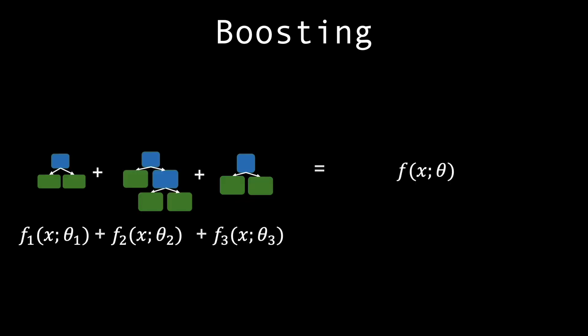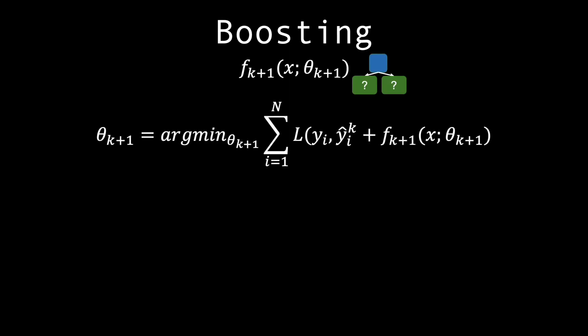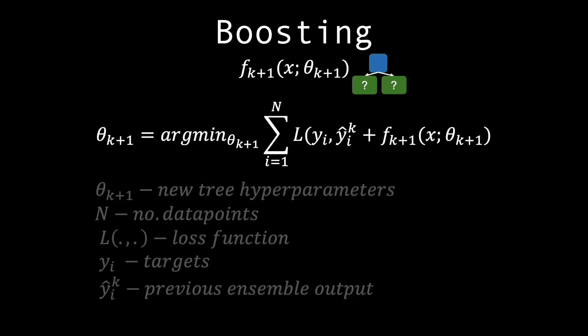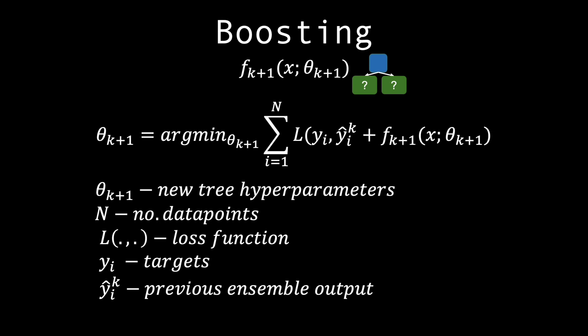Let fk be the output of tree k within an ensemble, and theta k contains the q and o associated with each tree. With this in mind, we minimize the loss by constructing the new tree such that it predicts the residuals of the current ensemble.